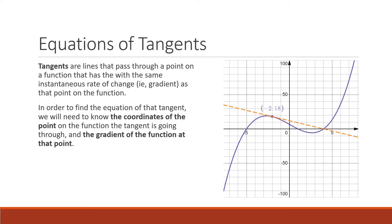Looking at this example, we have a point on our function: negative 2, 18. We have a line that goes through our point. What makes this dotted orange line a tangent is that its gradient is the same as the instantaneous gradient of our cubic at the point (-2, 18). Their gradients are the same.